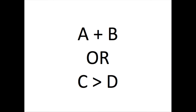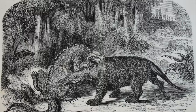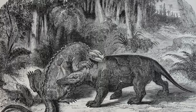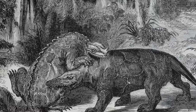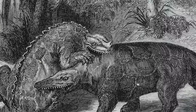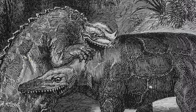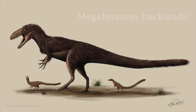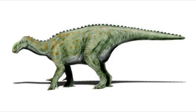In cladistics, we have two different ways of defining a group of organisms: either all organisms that are descended from the most recent common ancestor of A and B, or all organisms that are more closely related to C than to D, as shown in my lovely diagram. Dinosaurs happen to be a group like the first kind, defined based on the first two dinosaurs that were discovered, Megalosaurus and Iguanodon. So dinosaurs are all the descendants of the most recent common ancestor of Megalosaurus and Iguanodon.